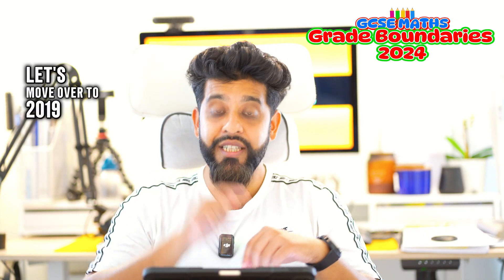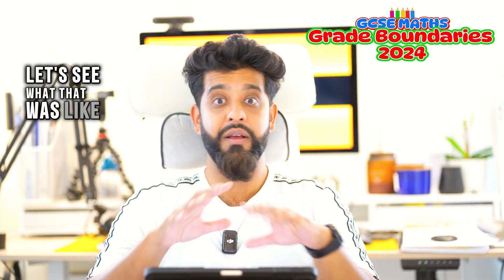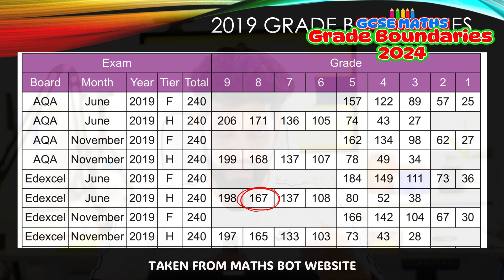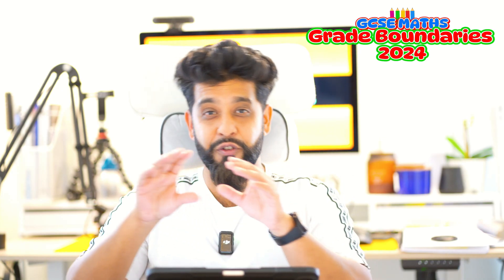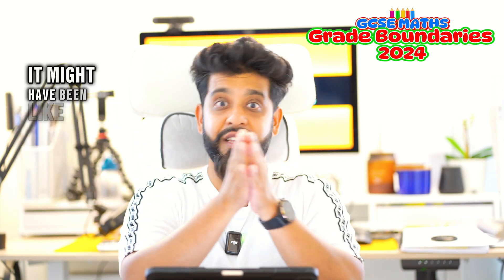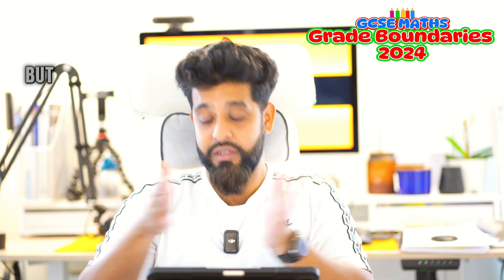Let's move over to 2019 to see what that was like before the whole pandemic. For Edexcel, there was a slight discrepancy between the June marks and the November marks. At grade eight, you can see that 167 marks out of 240 were needed in June 2019, but in the November resit it was two marks fewer — you needed 165. It varies from each grade, so you can't say the marks went down by two marks across the board — it might have been like that for a particular grade but not universally.